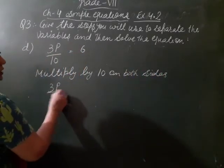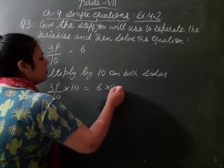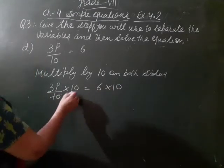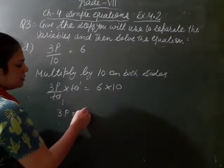So 3p by 10 multiplied by 10, and 6 multiplied by 10. 3p is equal to 6 tens are 60.